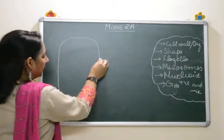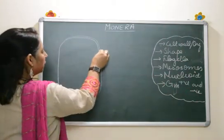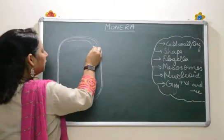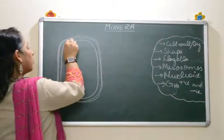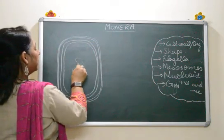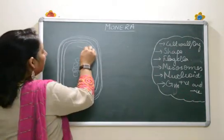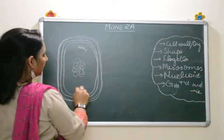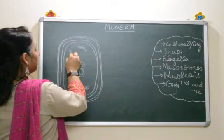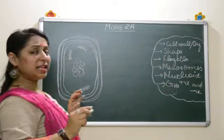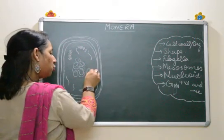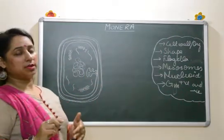Bacteria have a capsule present around them — a slimy capsule that covers the cell wall. After this capsule we have the cell wall, then the cell membrane, and in the center we have coiled DNA which is not enclosed by any nuclear membrane — that is the nucleoid. We have polysomes in the bacterial cells. A group of ribosomes present in strings or chains is known as polysomes. Then we have scattered RNA inside and an invagination of the plasma membrane known as mesosomes.